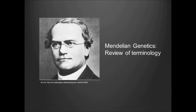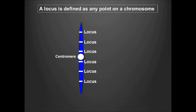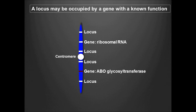In this video we will be reviewing several genetics terms that most or all of you are likely familiar with. First we'll begin with a locus. A locus is simply any location on a chromosome. Loci may or may not be occupied by genes, hereditary units that determine an organism's traits.